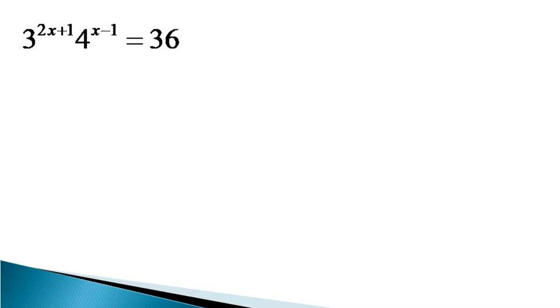first we represent the first term 3 raise to the power 2x plus 1 as 3 raise to the power 2x into 3 and the second term 4 raise to the power x minus 1 can be represented as 4 raise to the power x divided by 4 and this is equal to 36.